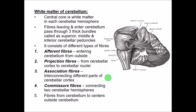Coming to the white matter of the cerebellum: the cerebellum is held in position by white fibers in the form of bundles called peduncles. Fibers coming from or going to the midbrain form the superior cerebellar peduncle; those from the pons form the middle cerebellar peduncle; and those from the medulla oblongata form the inferior cerebellar peduncle. There are five types of fibers: afferent fibers entering the cerebellum from the CNS; projection fibers connecting the cerebellar cortex to the cerebellar nuclei; association fibers connecting different parts of the cerebellar cortex; and commissural fibers connecting the two cerebellar hemispheres.